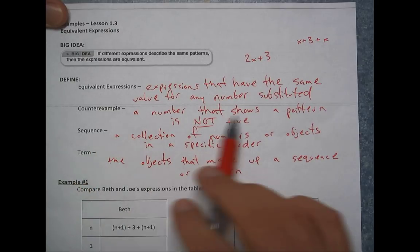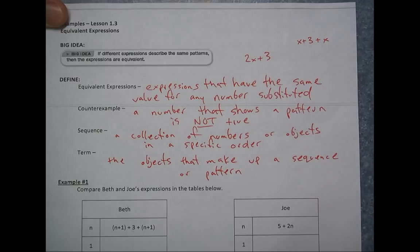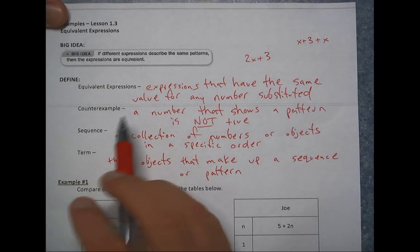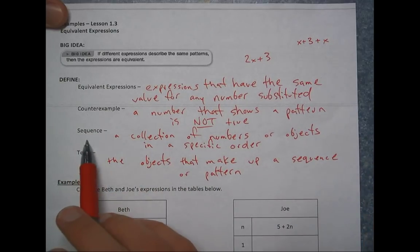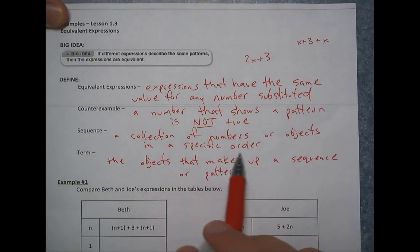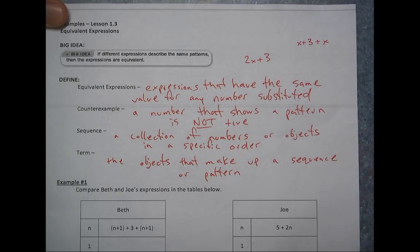So a counterexample is a number that shows a pattern is not true. So if somebody says that this pattern always works, and then you give them an example of a time it doesn't work, we would call that a counterexample, kind of proving something wrong. A sequence, this is our main focus today, is a collection of numbers or objects in a specific order. So a pattern, we started looking at patterns. Now a sequence is just a pattern of numbers.